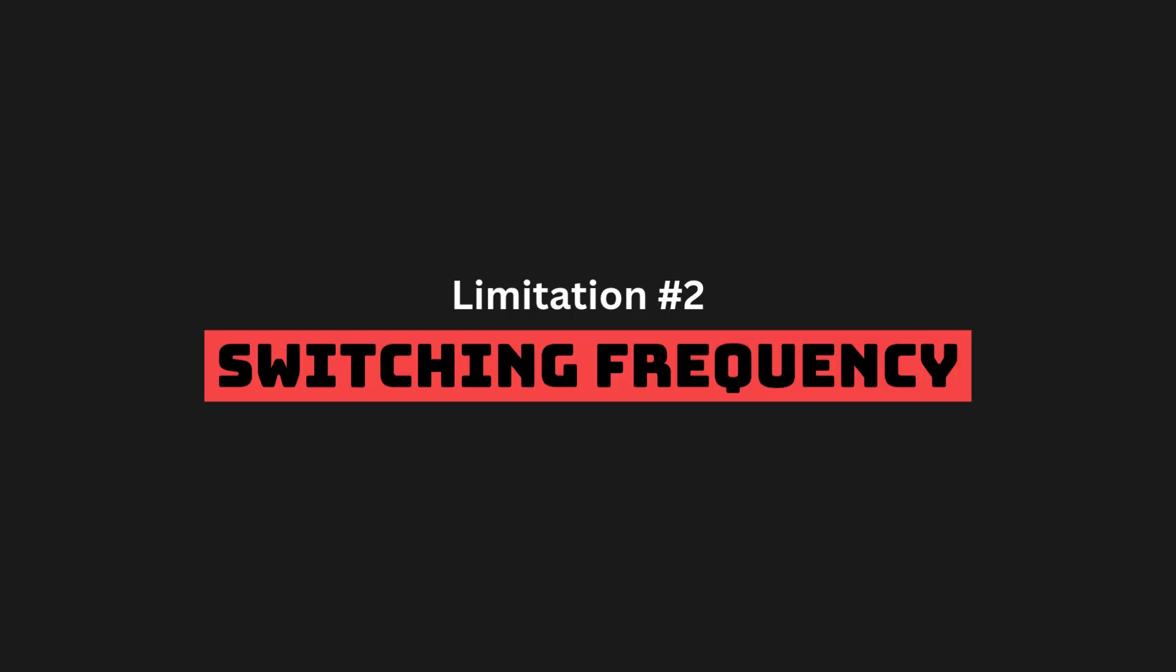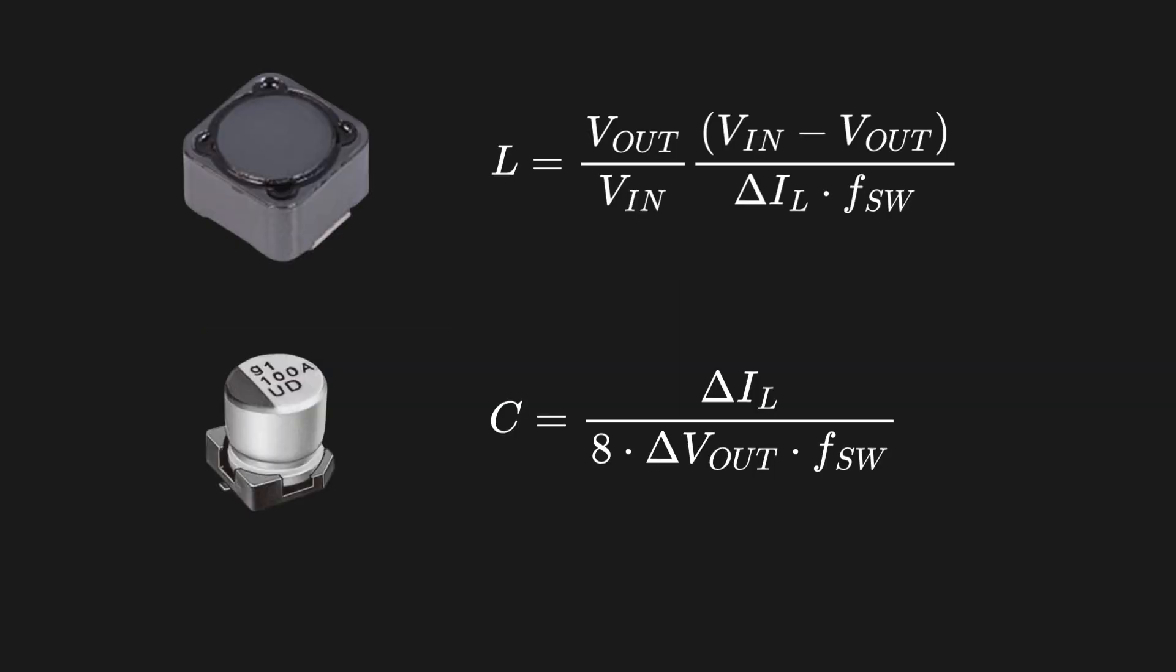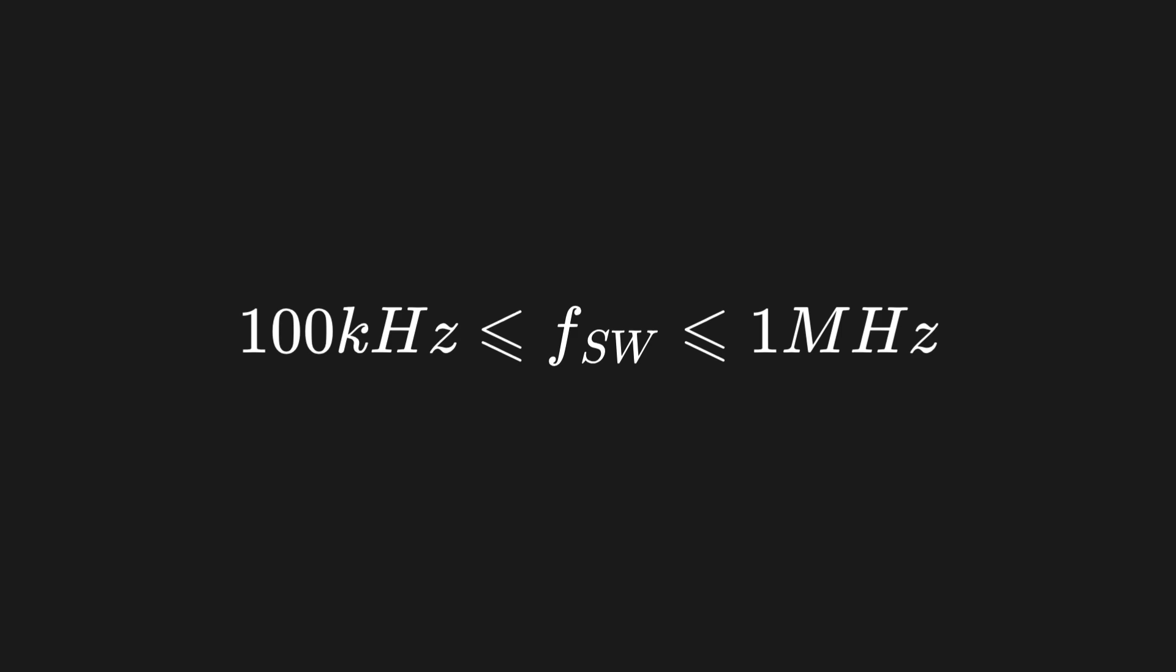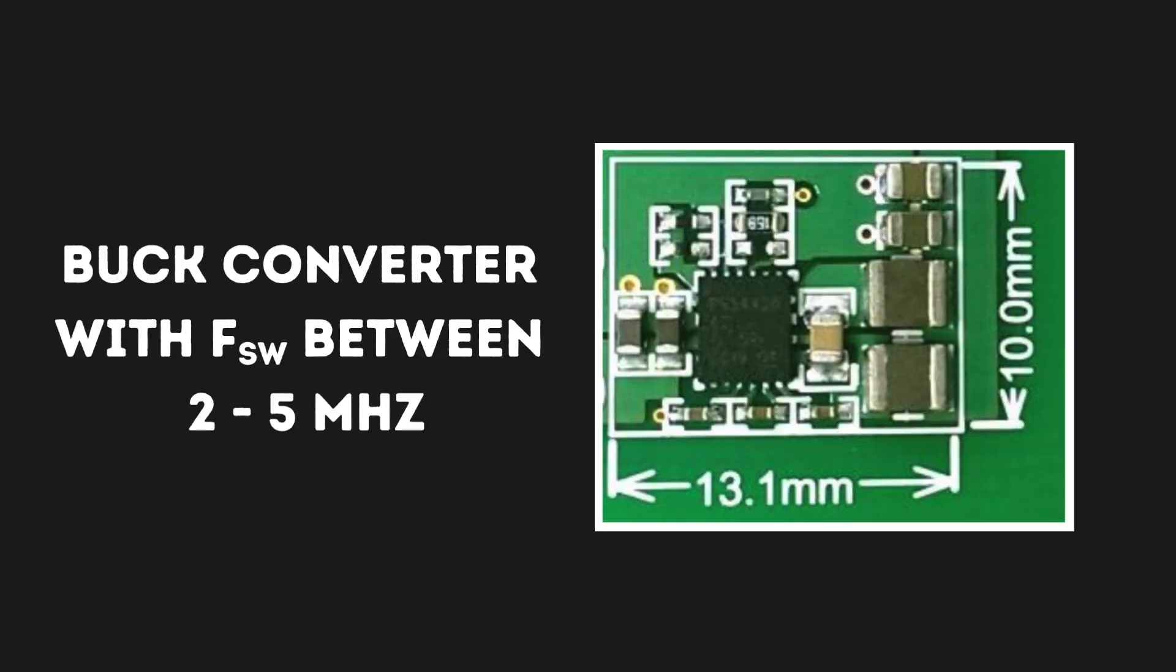A second limitation to consider are switching frequencies. Increasing the switching frequency is one way of reducing the size of inductors and capacitors, as both current and voltage ripples are inversely proportional to it. But still, most buck converters operate within 100kHz to 1MHz, with only a few designed to operate properly above this limit.